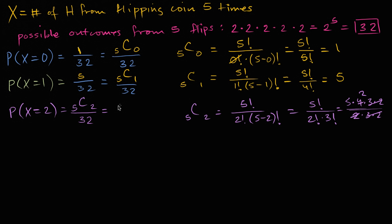So P(X=2) equals 10/32. We can see the pattern building: there's a 1/32 chance X equals zero, a 5/32 chance X equals one, and a 10/32 chance X equals two.